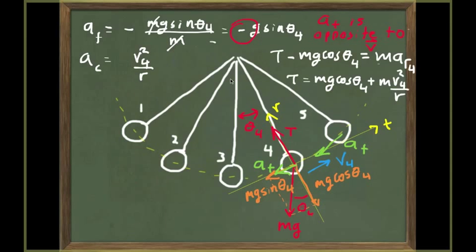At point 5, the tangential acceleration again points opposite to the velocity and is larger in magnitude than at point 4 because theta₅ is bigger than theta₄. At points 1 and 2, the tangential acceleration points in the direction of the velocity, with point 1 having a larger value than point 2 since theta₁ is greater than theta₂. The tangential acceleration at point 3 was zero. This completes the analysis of non-uniform circular motion for the pendulum. The only thing remaining is an equation for the velocity as a function of theta, which will be derived after discussing conservation of energy.